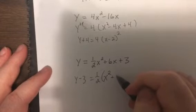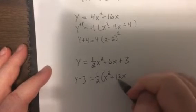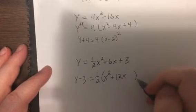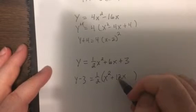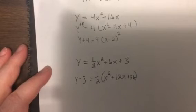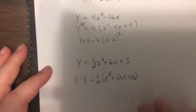Because it's half of 12x is 6x. So, half of 12 is 6. 6 squared is 36. But, I didn't add 36.